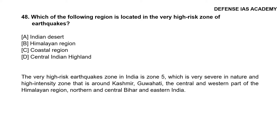Question 48: Which of the following regions is located in the very high risk zone of earthquakes? The answer is option B, the Himalayan region. The very high risk earthquake zone in India is Zone 5, which is very severe, covering Kashmir, Guwahati, the central and western Himalayan region, northern and central Bihar and eastern India.